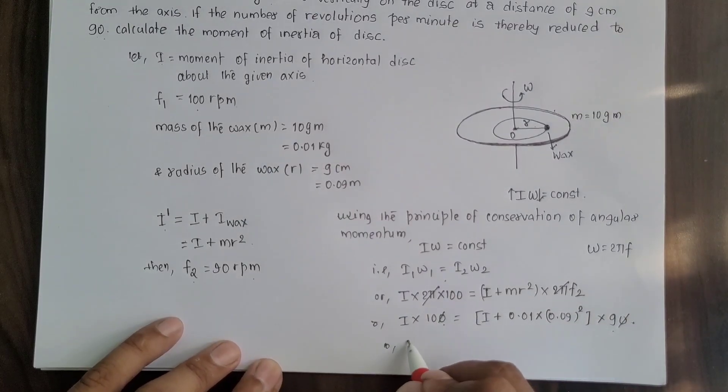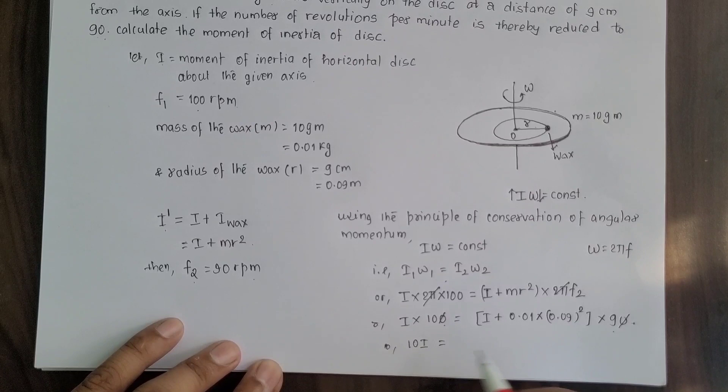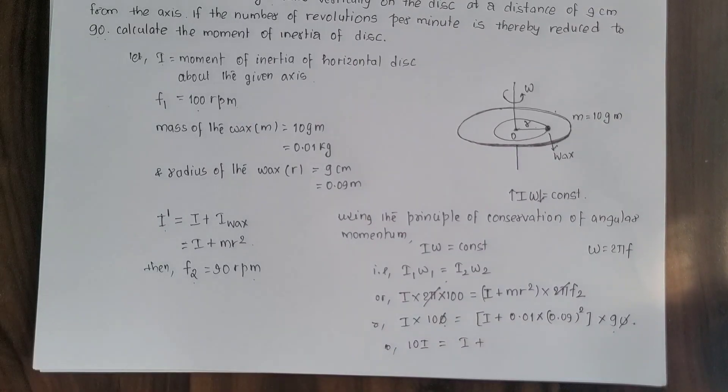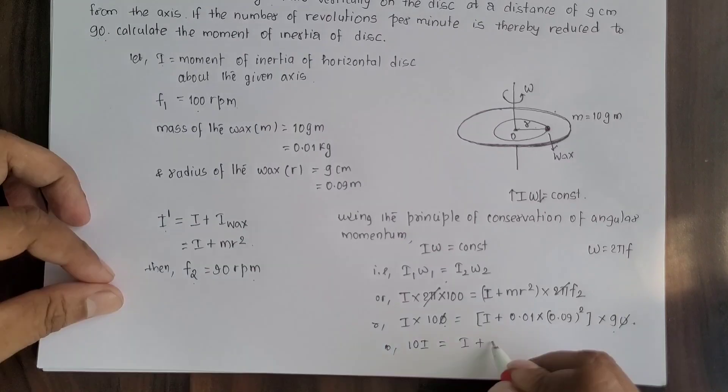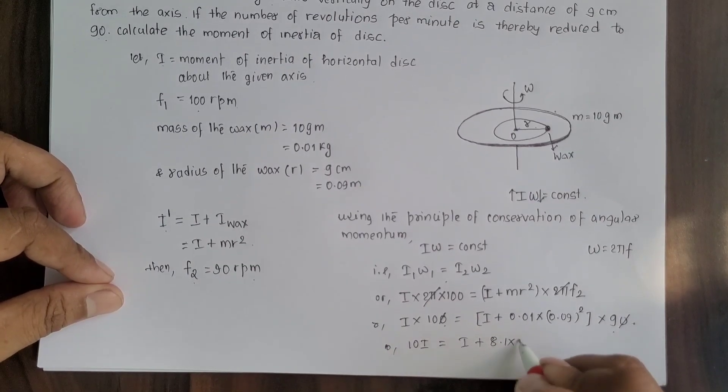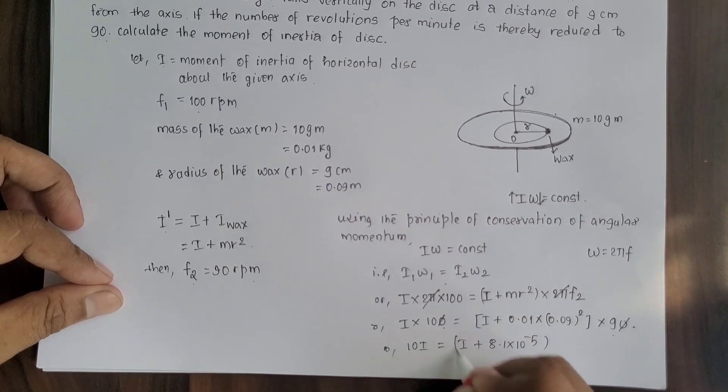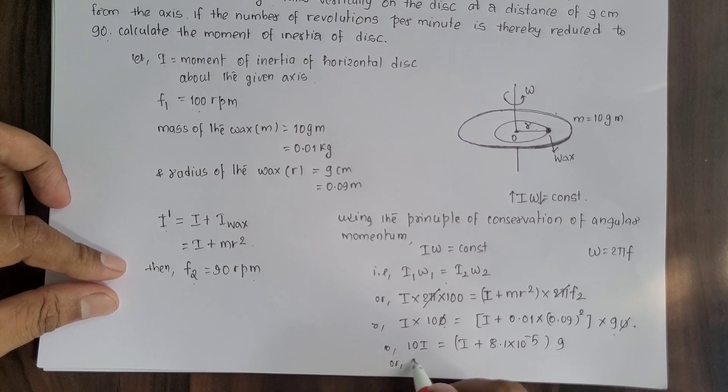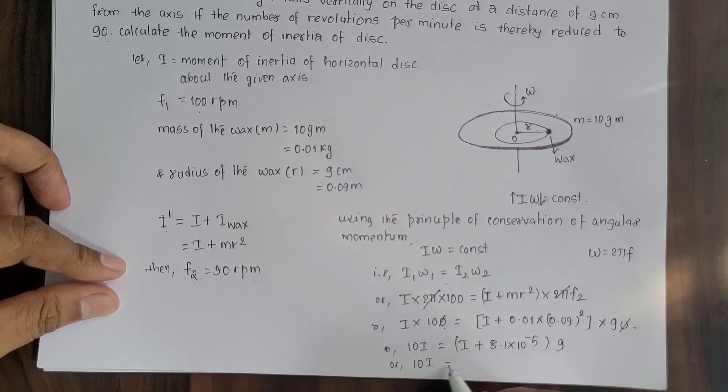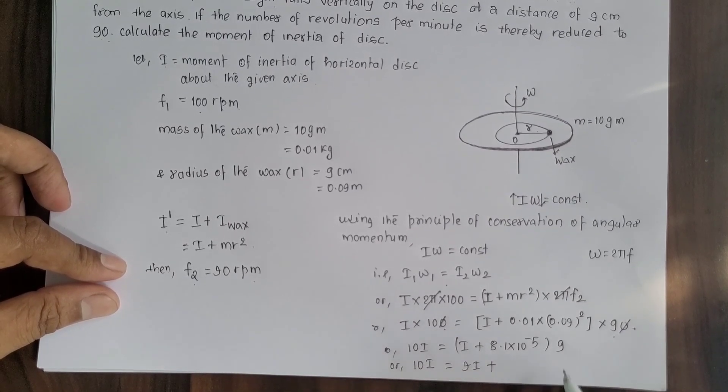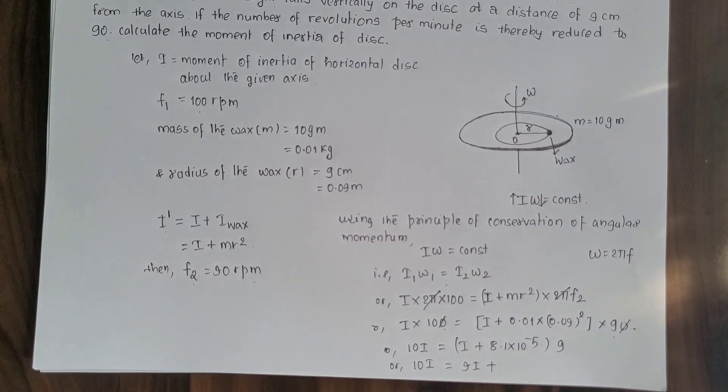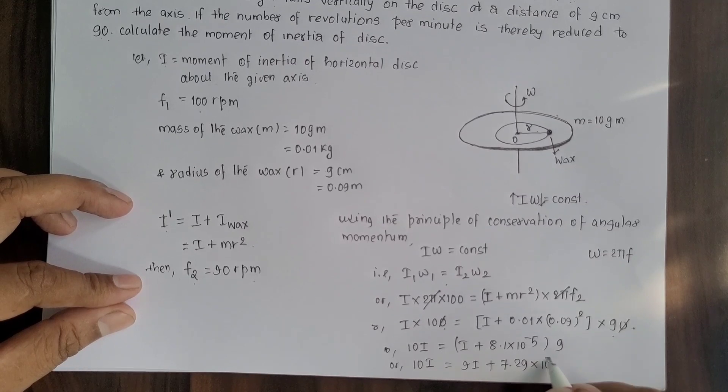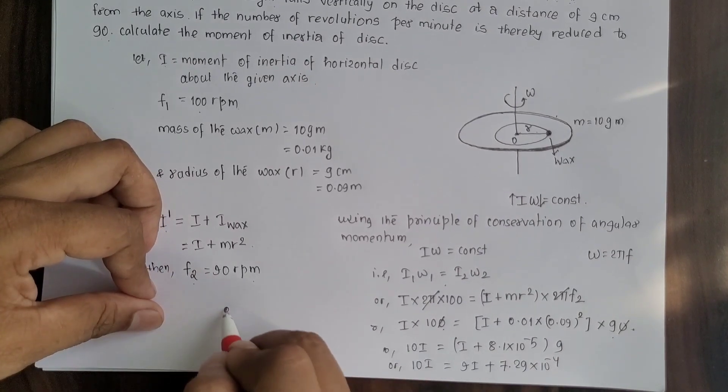Now 10I equals solving this, I plus 0.01 times 0.09 squared, this value is 8.1 times 10 to the power minus 5, times 9. Solving this, 9I plus 9 times 8.1 times 10 to the power minus 5 equals 7.29 times 10 to the power minus 4.